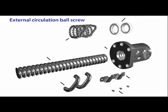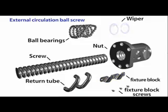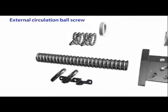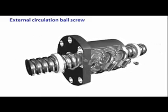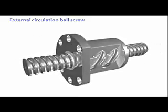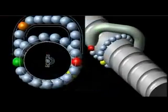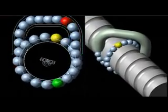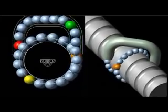External circulation ball screws consist of a screw, nuts, ball bearings, return tube, fixture block, and wipers. The bearings are located between the screw and the nut, and circulation is achieved using the return tube. As a result, the bearings return by way of the nut. Since the return tubes are located outside of the nut, this is known as an external circulation ball screw.